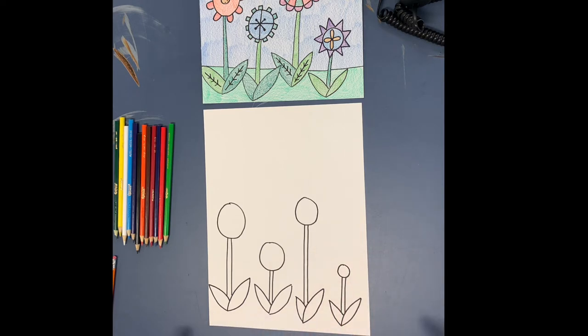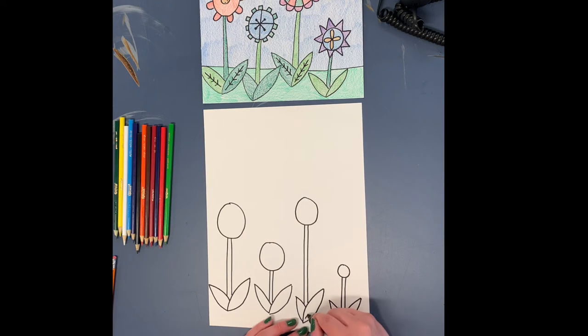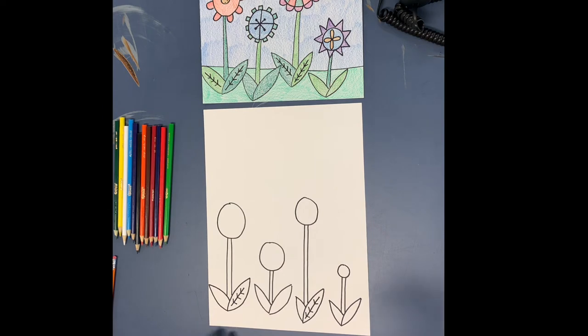And leaves all have these things called veins, so to do your veins, it's just a line down the center, and then some V's. And you don't have to do veins on all of the flowers, or all the leaves. I only did veins on two of my flowers last time, and I think I'm just going to do one leaf having veins on each one. So that's, there's my veins.